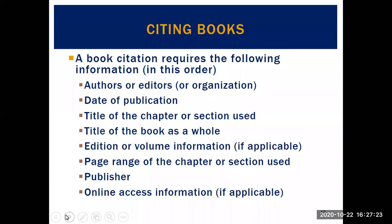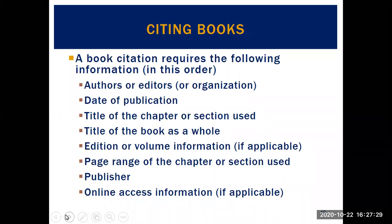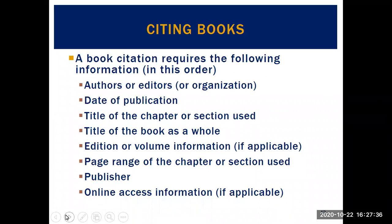When citing books, the citation requires the following information in this order: the authors or editors, or if there are no authors, the organization; the date of publication; the title of the chapter or section used; the title of the book as a whole; the edition or volume information if applicable; the page range of the chapter or section used; the publisher; and finally the online access information, only if applicable.